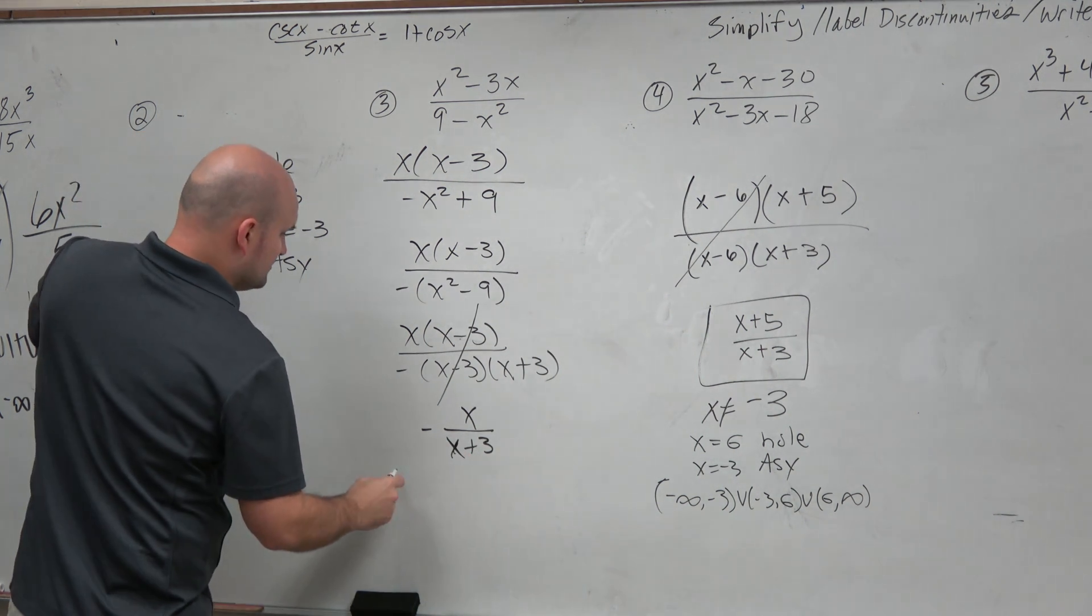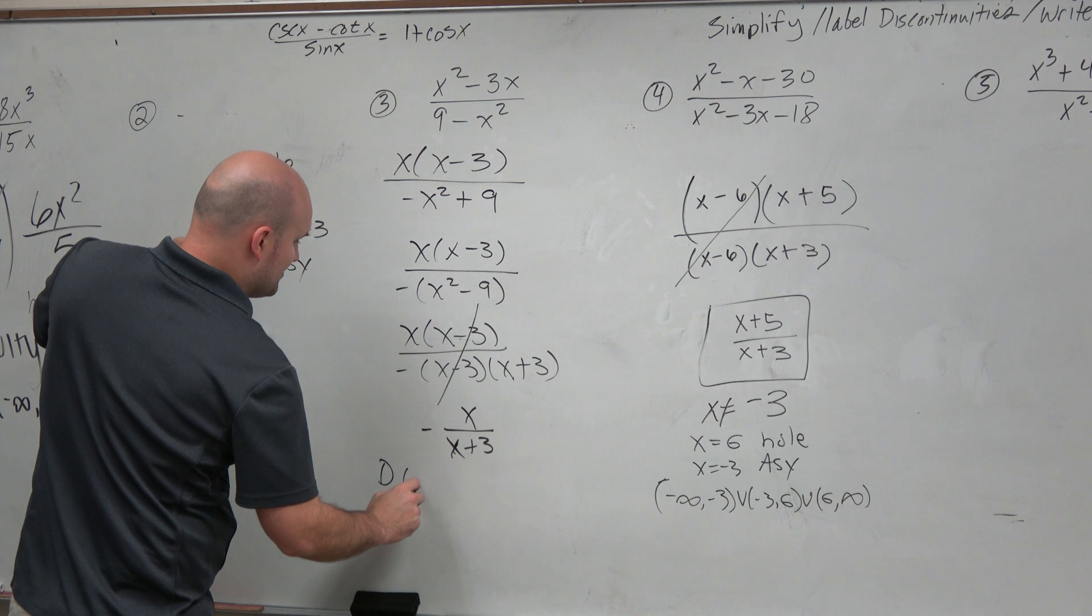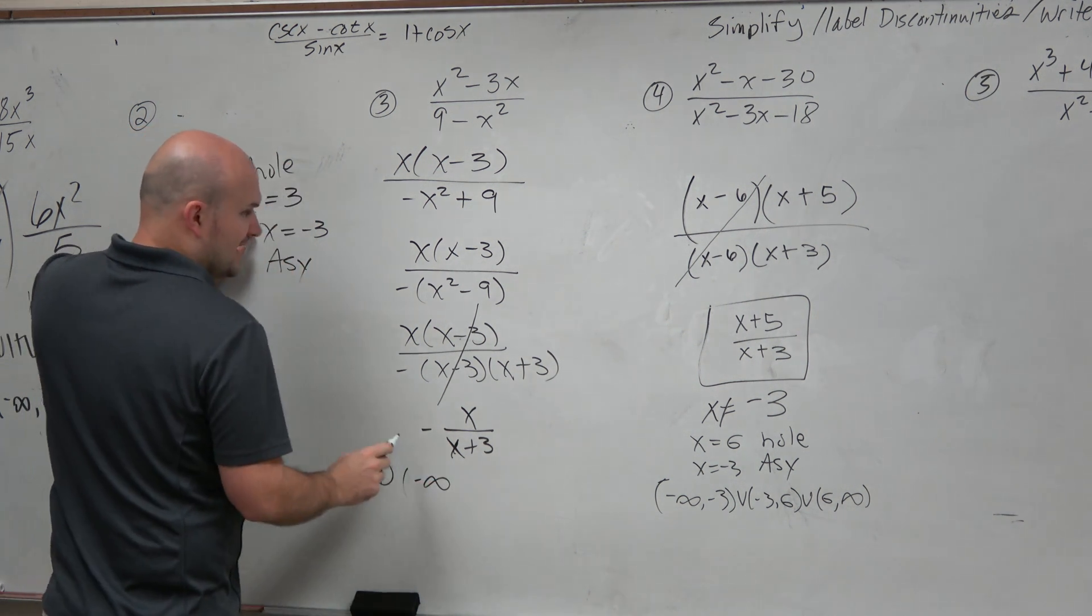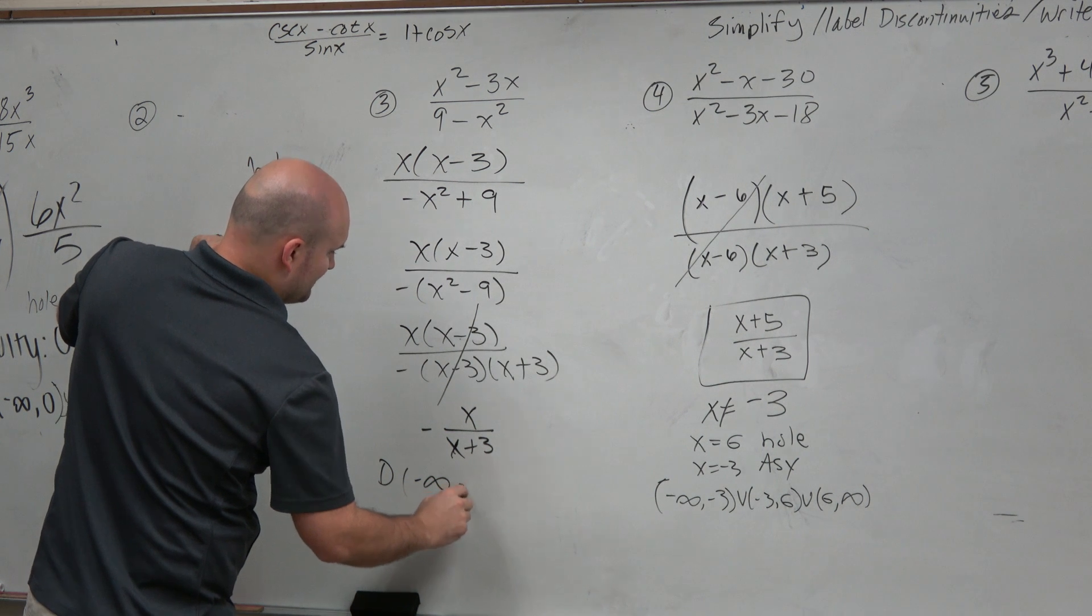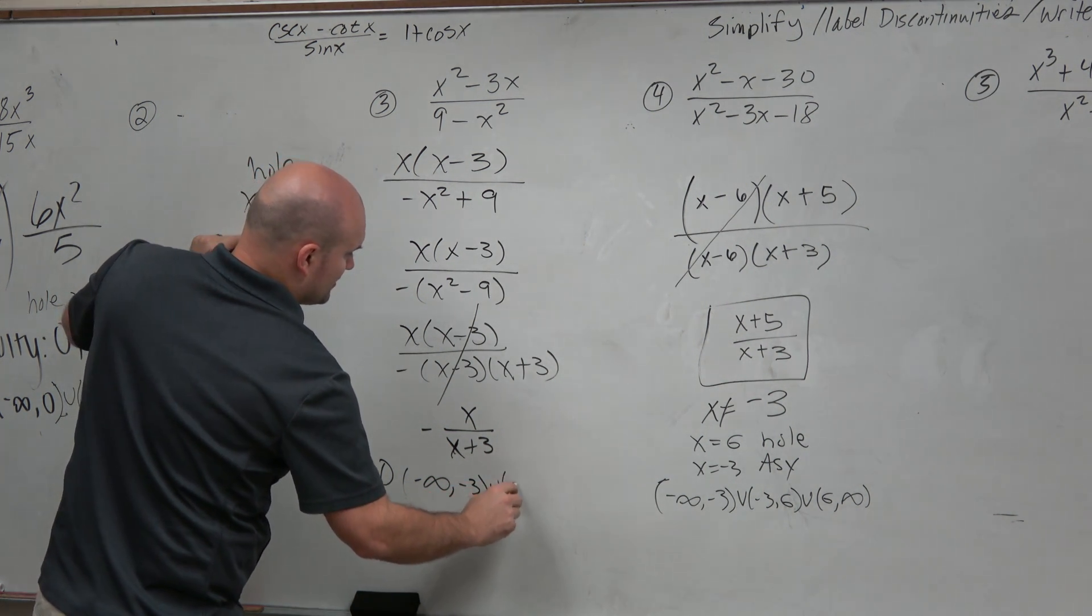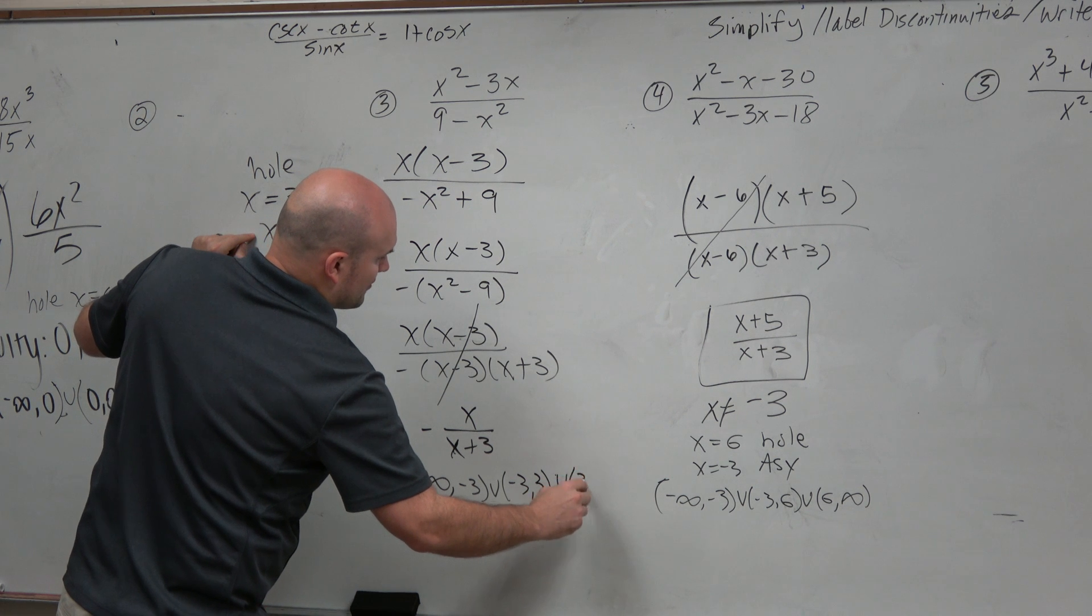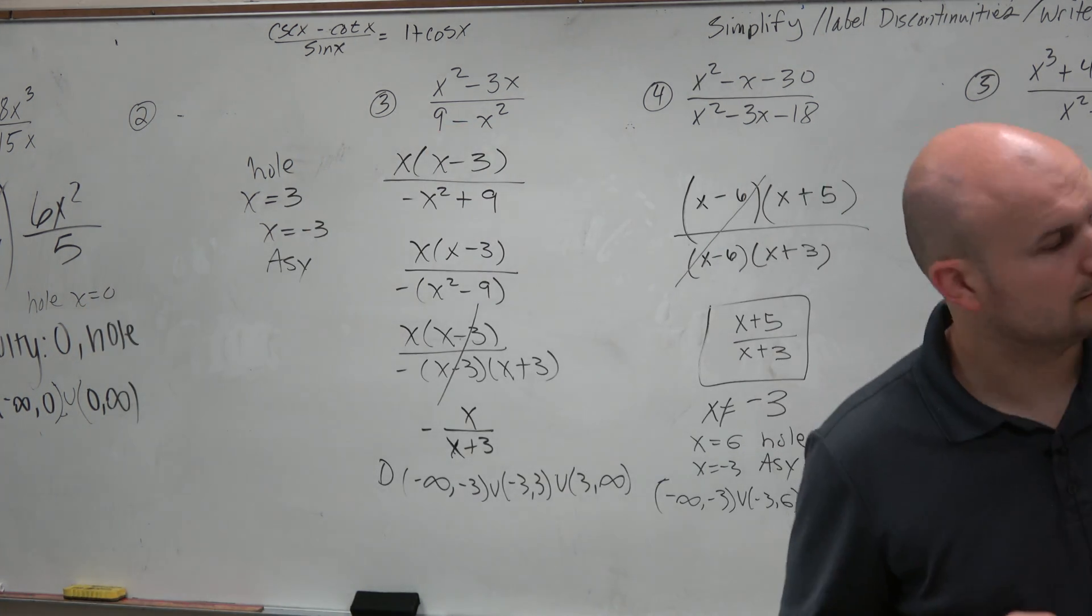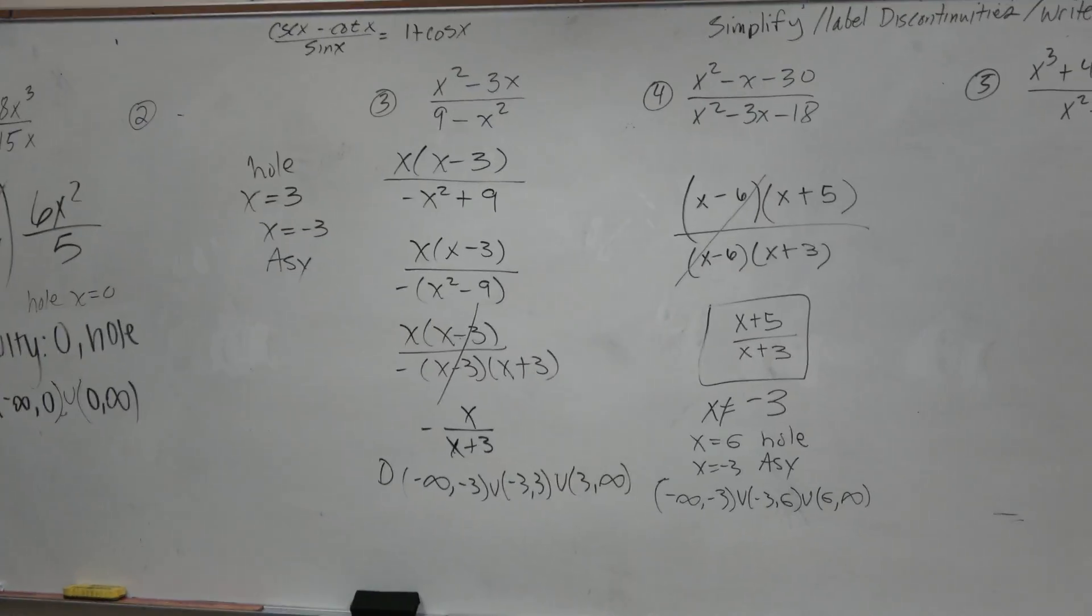OK, now let's write the domain. The domain of this function would be from negative infinity. My two discontinuities are at negative 3 and 3. So it would be negative infinity to negative 3, union negative 3 to 3, union 3 to infinity.